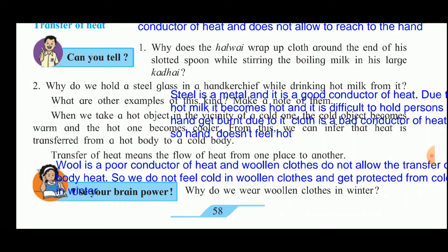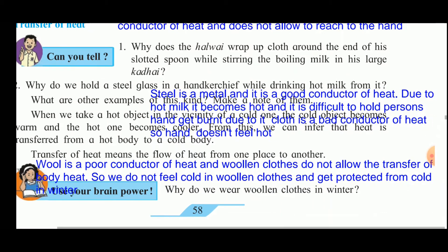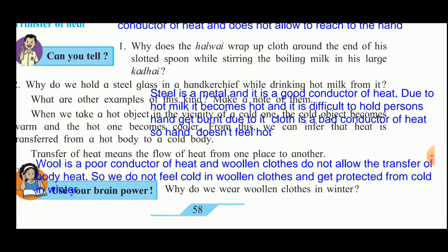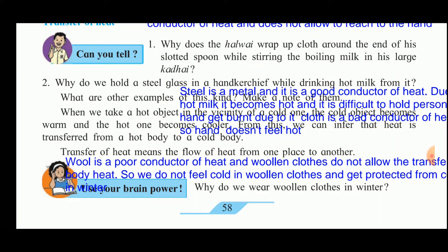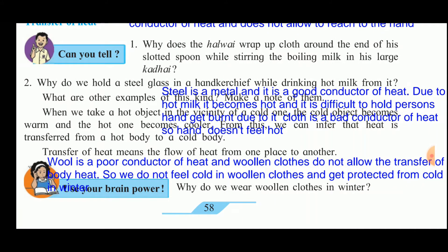Why do we hold a steel glass in a handkerchief while drinking hot milk? Steel is a metal and a good conductor of heat. Due to the hot milk it becomes hot and is difficult to hold, burning the hand. Cloth is a bad conductor and does not allow heat to reach the hand. When a hot object is near a cold one, the cold object becomes warm and the hot one becomes cooler — heat is always transferred from the hot body to the cold body.